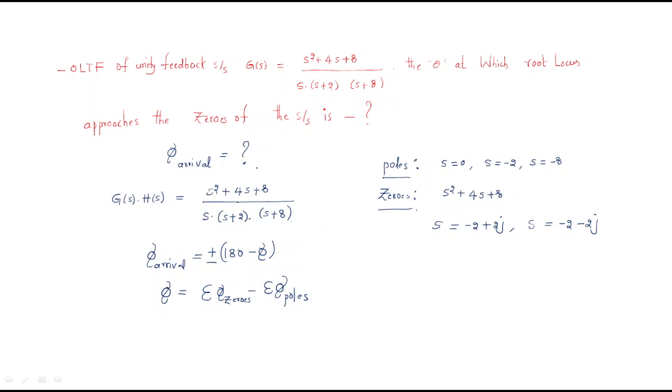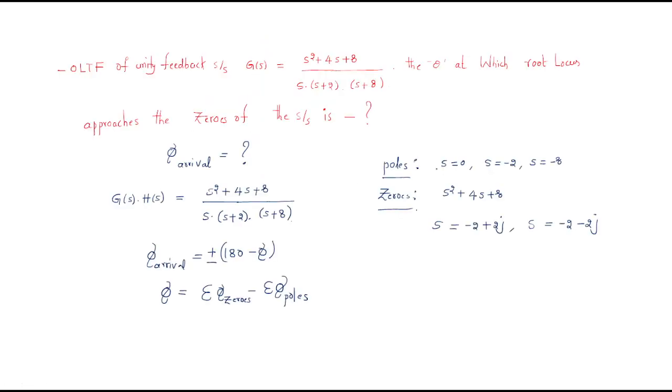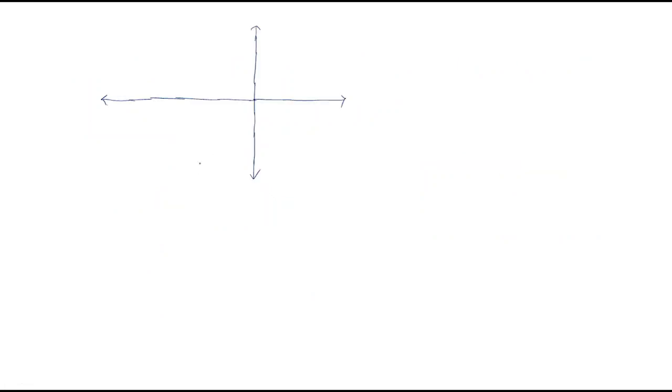To find the angle of arrival, we first draw the s-plane showing the poles and zeros locations. The real axis and imaginary axis are drawn. Poles are marked with an ×: s = 0 is one pole, s = -2 is another pole, and s = -8 is the third pole.